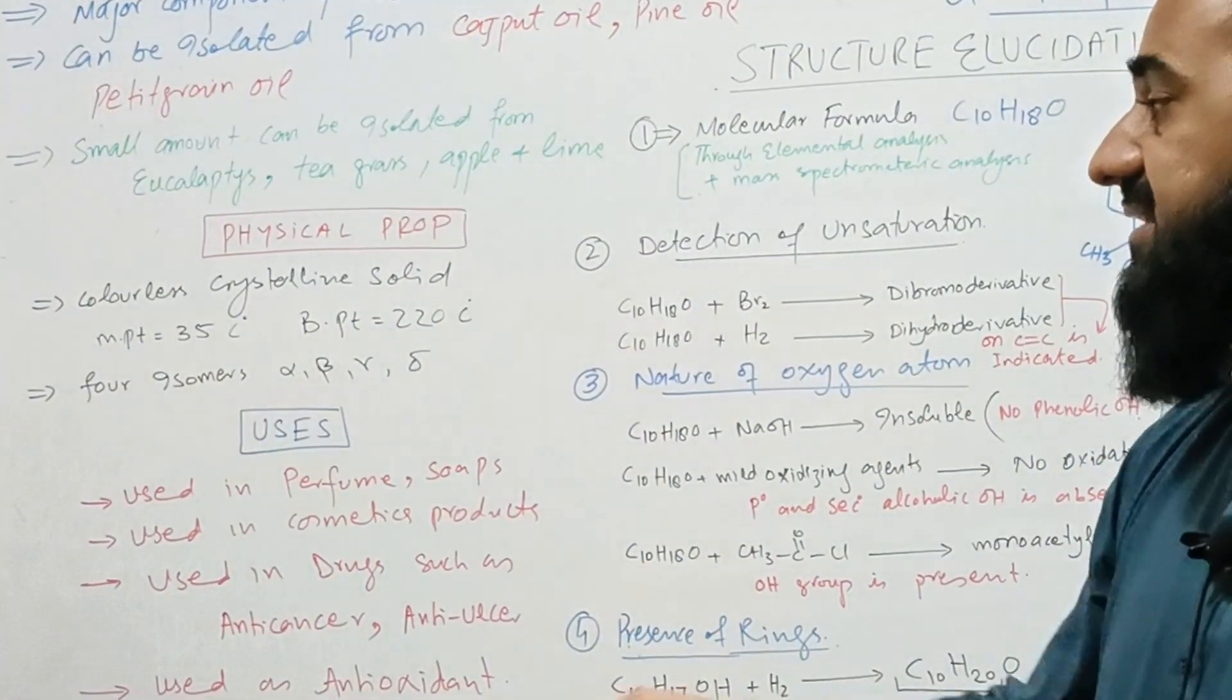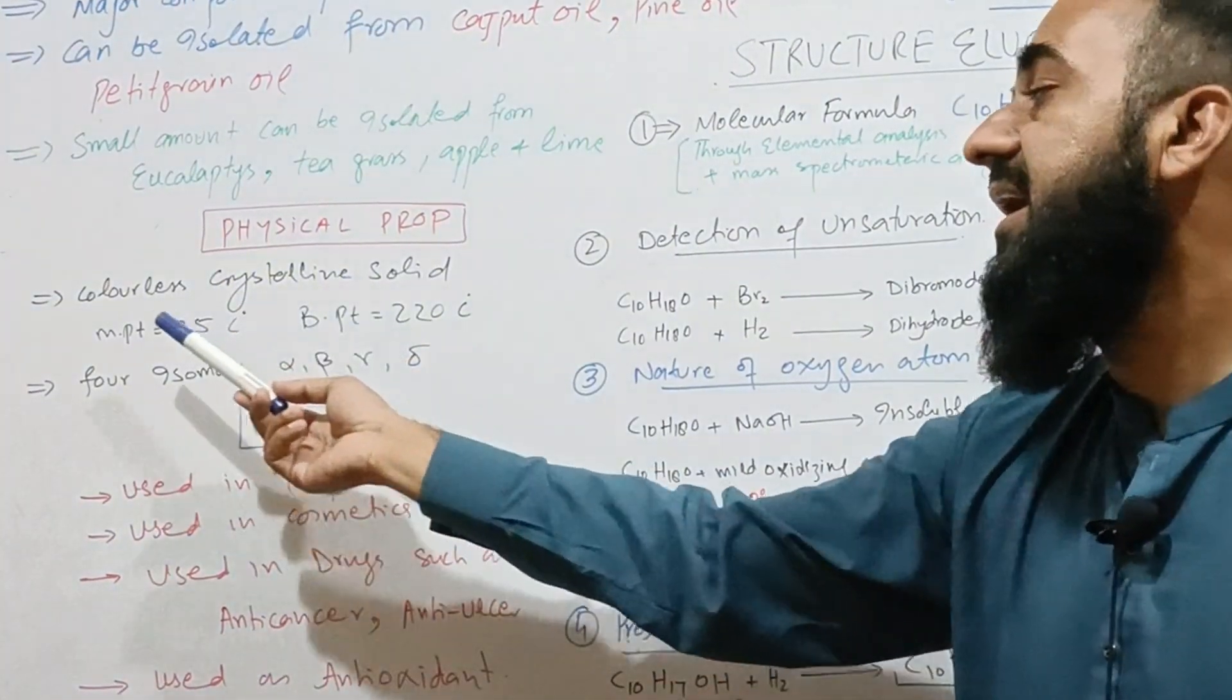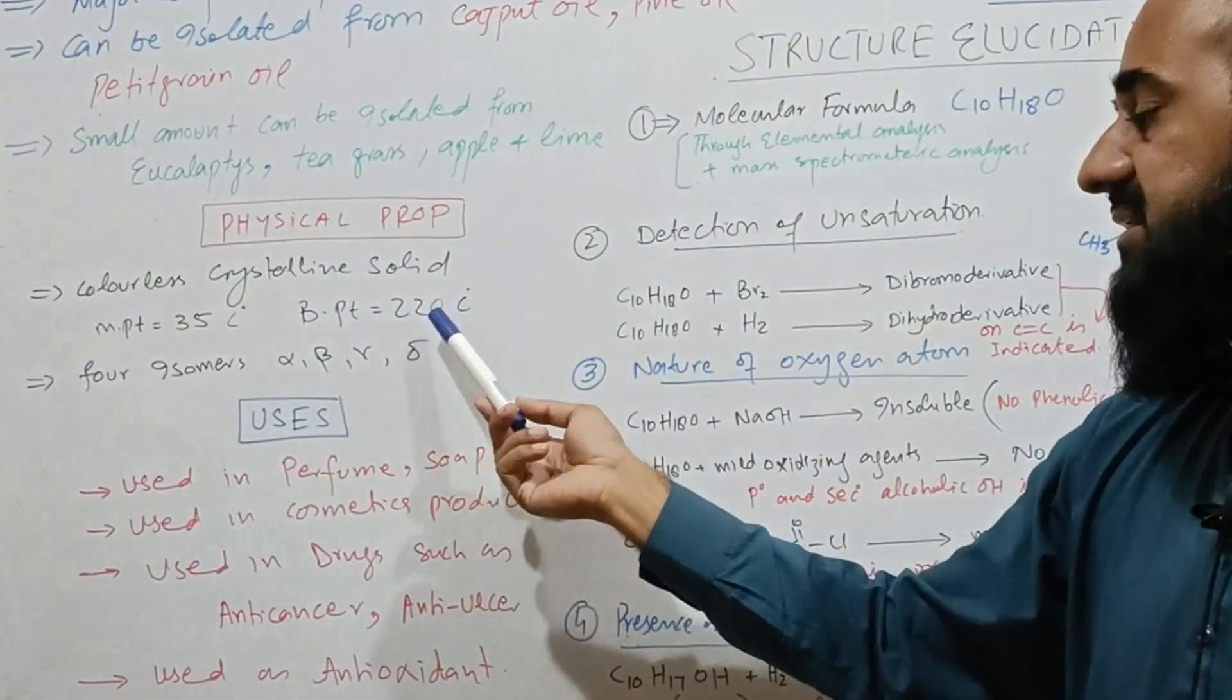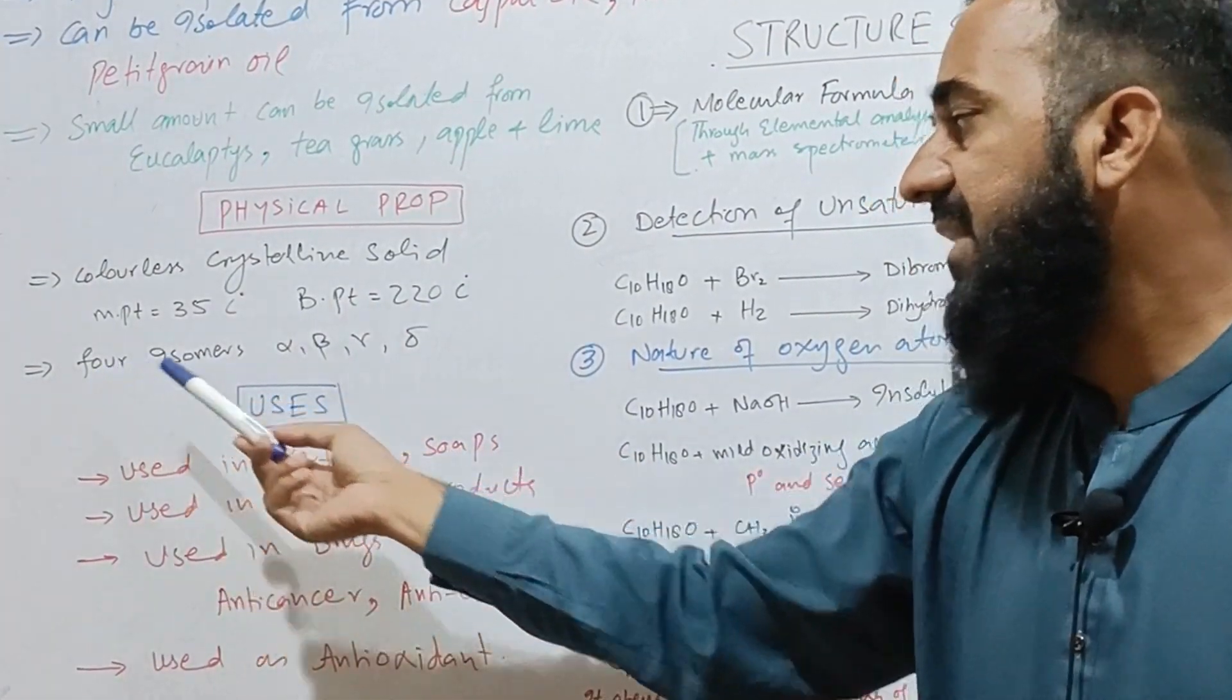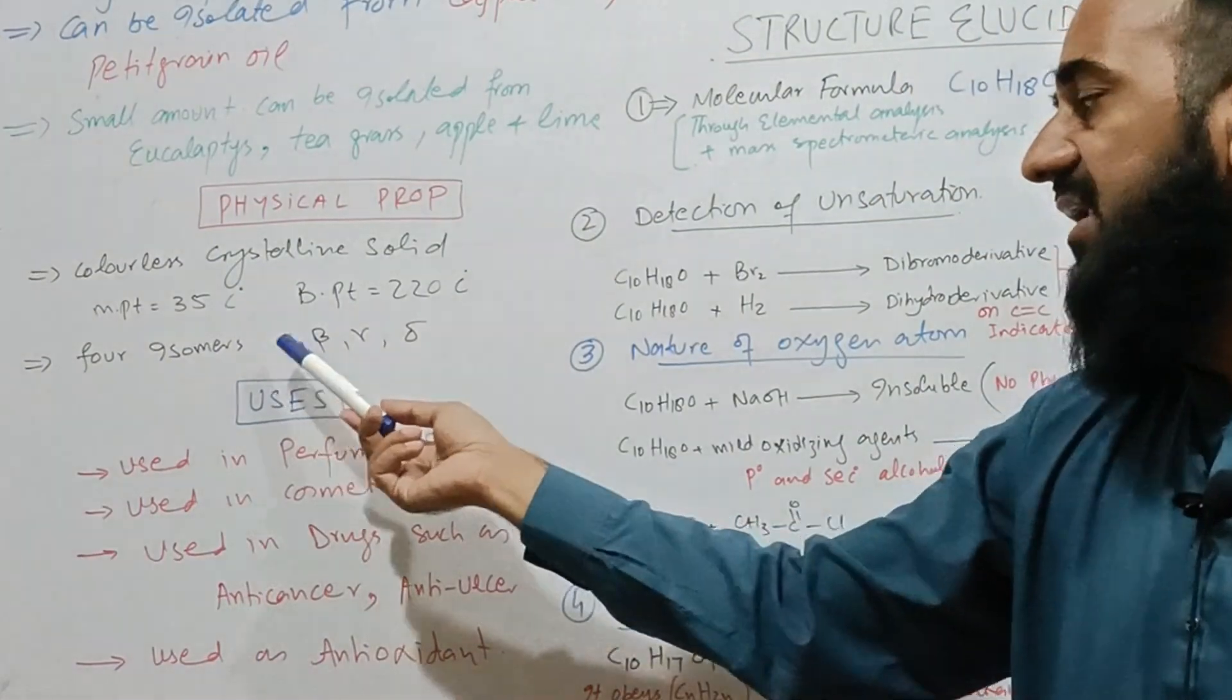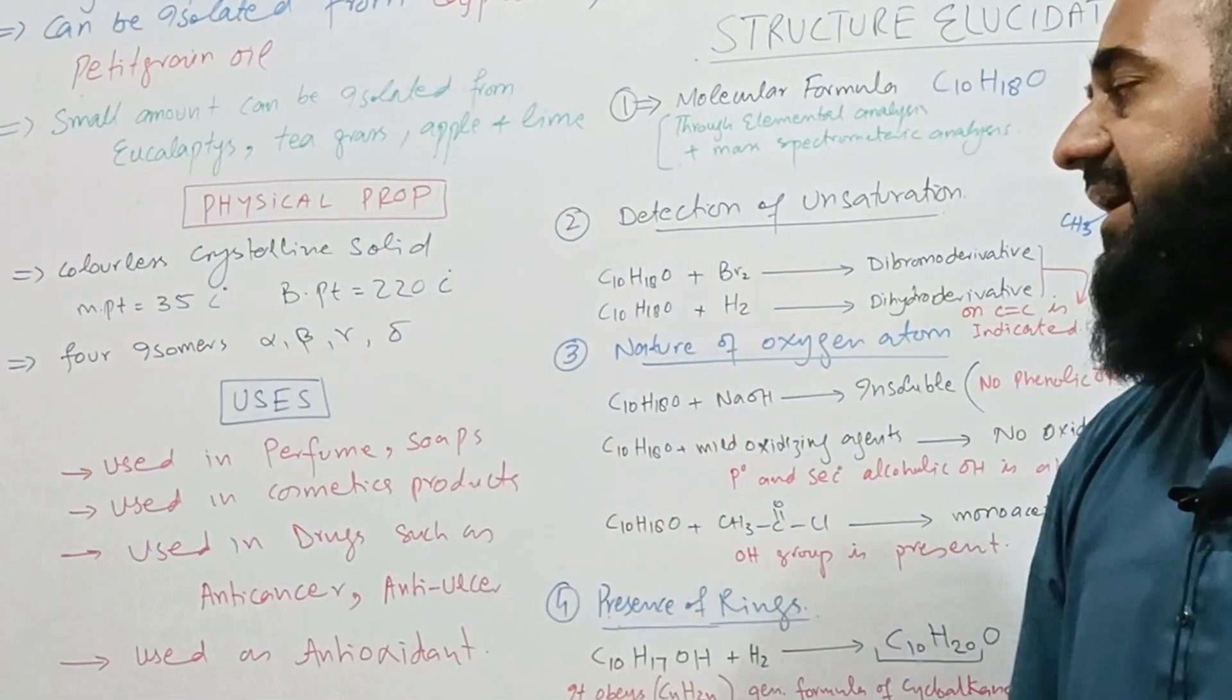Looking at the physical properties, it is a colorless crystalline solid. Its melting and boiling points are given here. It occurs in four isomeric forms: alpha, beta, gamma, and sigma.